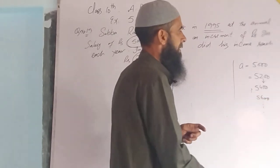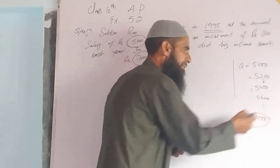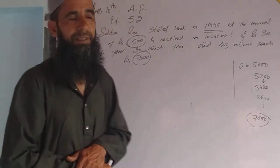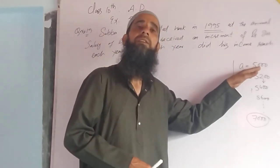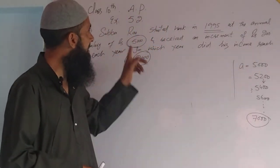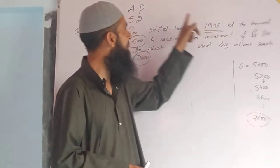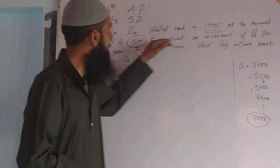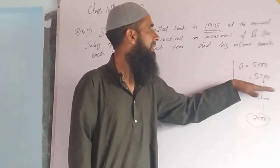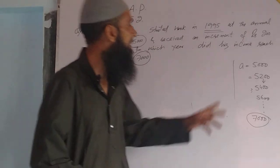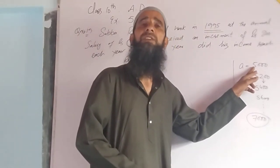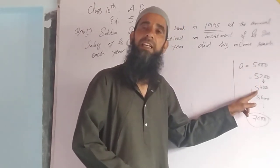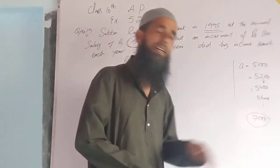And so on, and it reaches 7000. We need to find after how many years the salary becomes 7000. If we look at this, the salary in 1995 is the 1st year salary, then 2nd year, 3rd year, and so on — it becomes an arithmetic progression.